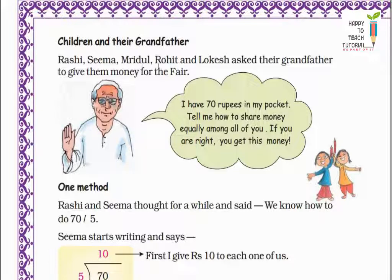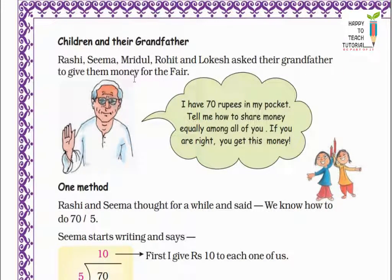Rashi, Sima, Mridul, Rohit and Lokes asked their grandfather to give them money for the fare. Yahaan pe Rashi, Sima, Mridul, Rohit and Lokes ne mele mein jaane ke liye apne grandfather se paise maange. So grandfather ne kya bola? I have 70 rupees in my pocket. Tell me how to share money equally among all of you. Dada ji ne bola ki mere paas 70 rupees hai.